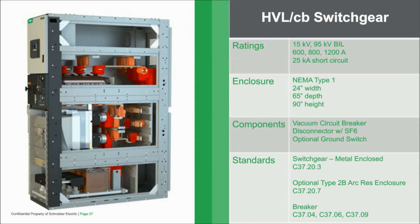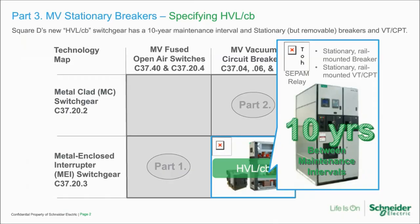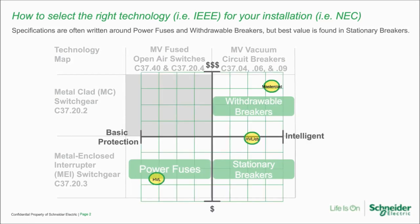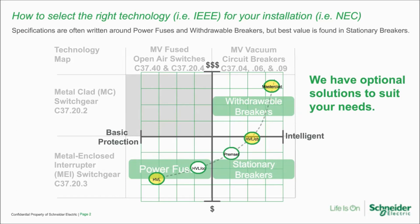There are questions around fixed versus withdrawable breakers in terms of cost. We need to talk price on a case-by-case basis, but in general, stationary breaker switchgear is priced equivalent to or under Masterclad metal-enclosed prices. It depends on the ratings and the application. Medium voltage switchgear generally has a market value and all of this gear is competitive. It's equivalent to or under the metal clad equivalent offer.